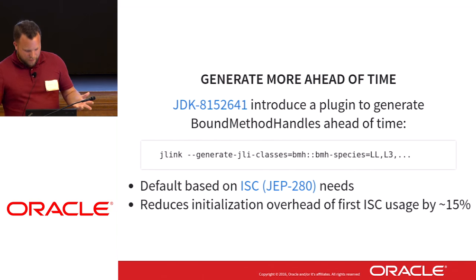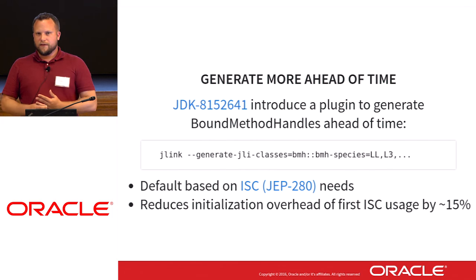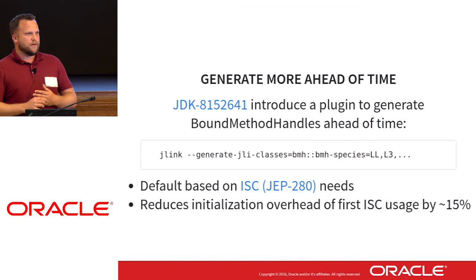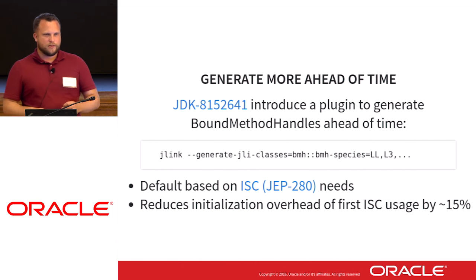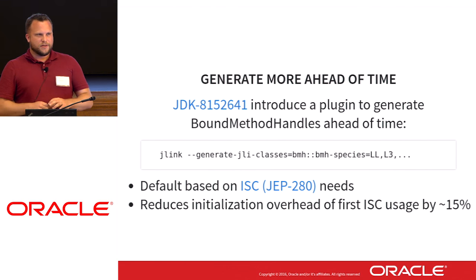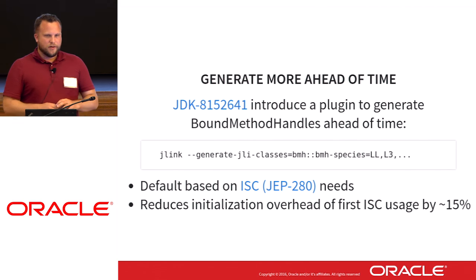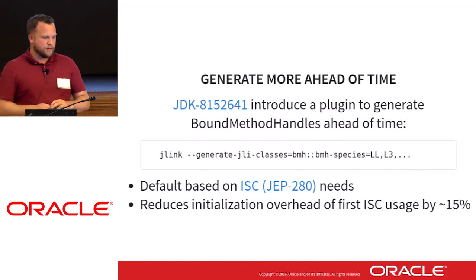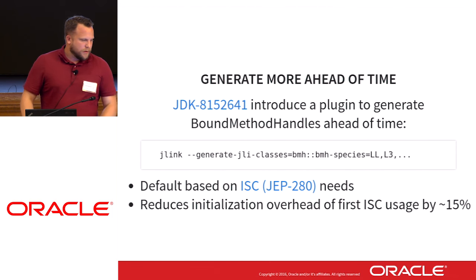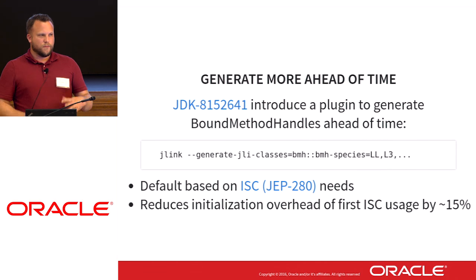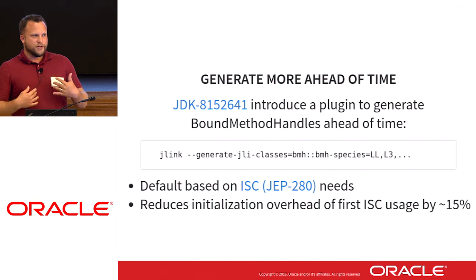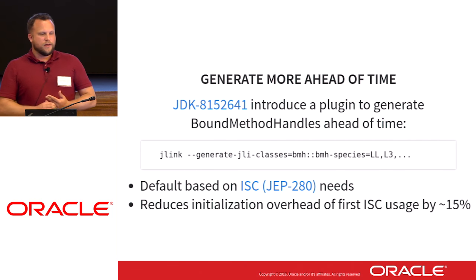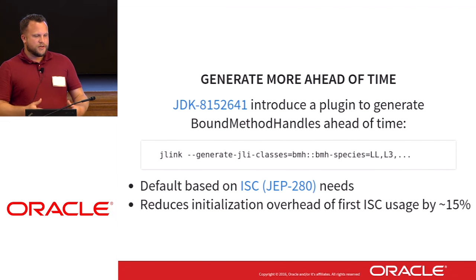The default in the plugin was picked based on the number of bound method handles used by IndifyStringConcat — the remarkable feature that replaces StringBuilder concat chains with invoke dynamic calls, giving peak performance opportunities. You should really look at Alexei Shippelov's work on this. The BMH pre-generation was, on the startup test of IndifyStringConcat that I was using, a total initialization overhead reduction of about 15% — that's the part of the initialization that was bound method handles.